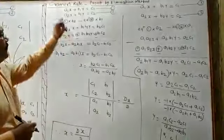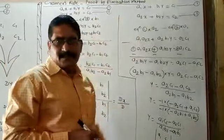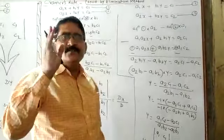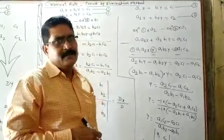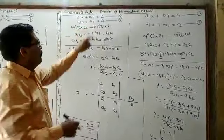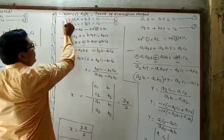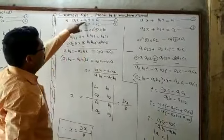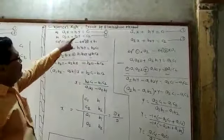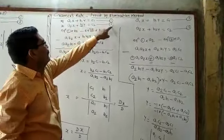To prove Cramer's rule, we need to equate the coefficient of y once and the coefficient of x once. To equate the coefficient of y, the coefficient of y in the second equation is b2 and in the first equation is b1. So multiply equation 1 by b2 and equation 2 by b1.